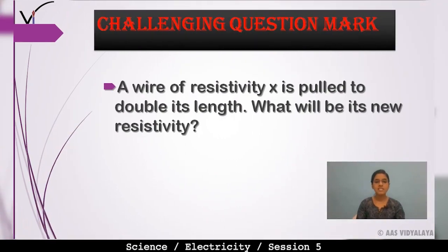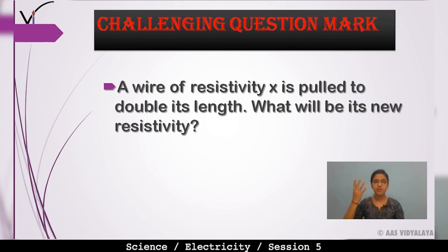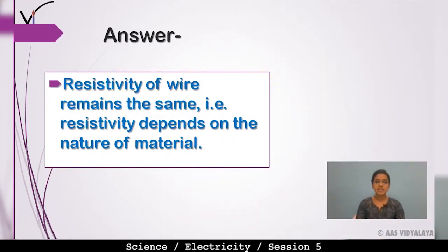Today's challenging question: A wire of resistivity X is pulled to double its length. What will be its new resistivity? The answer is that the resistivity of the wire remains the same — X. Resistivity depends only on the nature of the material, not on the length, so it does not change.